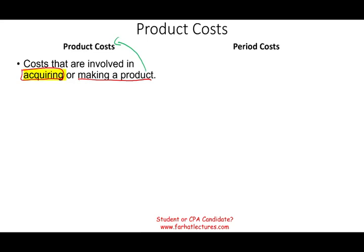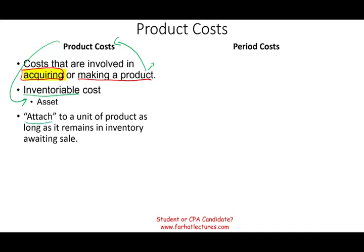Product costs are inventoriable costs. Once you make the product, it sits on the shelves or in your warehouse and is considered inventory — just like purchased pants are part of inventory. Simply put, product cost is an asset until it is actually sold. Any cost you incur, you attach it to the unit of product you are producing, and as long as that car sits in your warehouse or at the dealership awaiting sale, it's considered inventory.